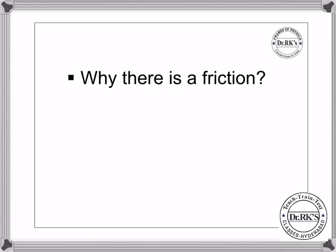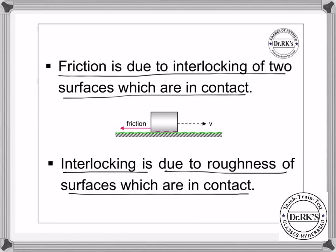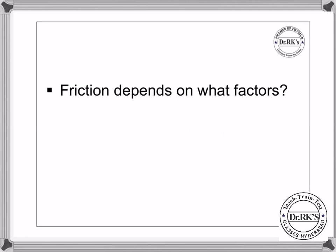Why is there friction? Let us find out. Friction is due to interlocking of two surfaces which are in contact, and this interlocking causes intermolecular attraction. This interlocking is due to the roughness of surfaces which are in contact.